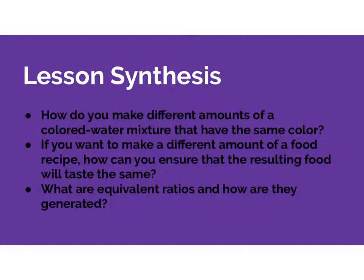In summary, how do you make different amounts of colored water mixture that have the same color? You have to keep the proportions equivalent. You have to have equivalent ratios. If you want to make a different amount of food recipe, how can you ensure that the resulting food will taste the same? Well, you have to multiply each part of the ratio or divide each part of the ratio by the same number. So what are equivalent ratios? Equivalent ratios are ratios that have the same proportions.